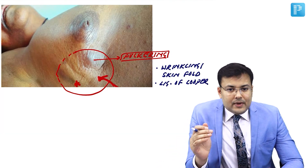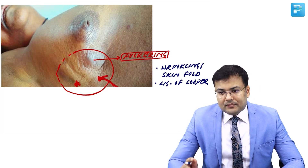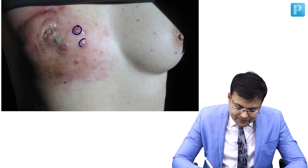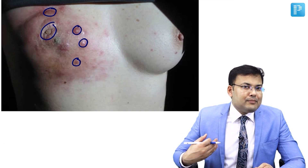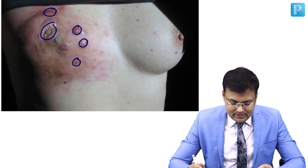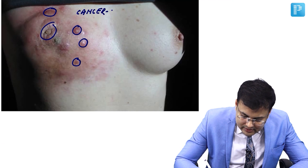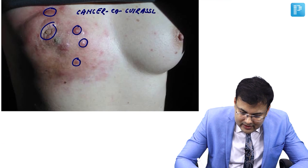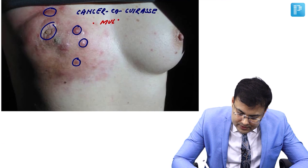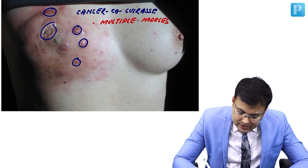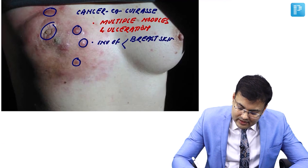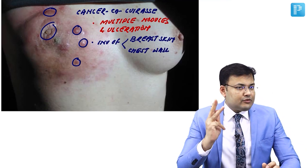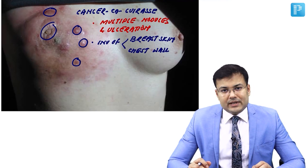Focus on the right breast. You can see there are multiple nodules and ulceration in the right breast. This is because of involvement of breast, skin, and chest wall, and this is known as cancer en cuirasse. So these are the three terms which are frequently asked: dimpling, puckering, and cancer en cuirasse. These are the image-based questions related to these signs.